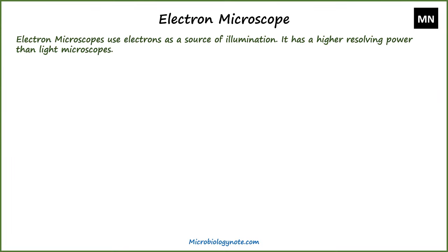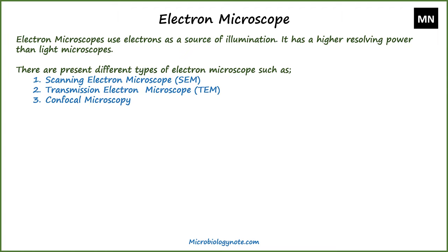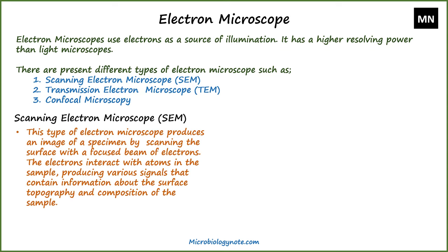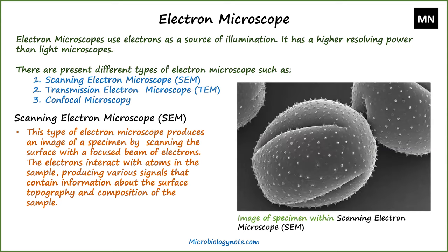Now let's talk about the electron microscope. Electron microscopes use electrons as a source of illumination. They have a higher resolving power than light microscopes. There are three types of electron microscope. The first is the scanning electron microscope, which produces an image of a specimen by scanning the surface with a focused beam of electrons. The electrons interact with atoms in the sample, producing signals that contain information about surface topography and composition. These microscopes are used to study the surface area of microorganisms in detail.